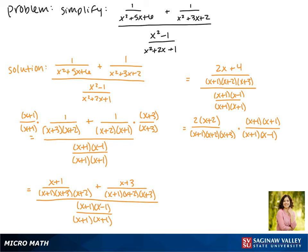Now we can start to cancel out factors. We see two x plus 1's in the denominator and in the numerator. There's also an x plus 2 in the denominator and the numerator. So what's left is a 2 and a factor of x plus 3 and x minus 1 in the denominator.